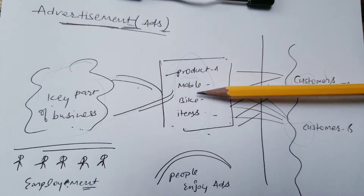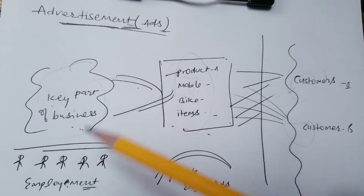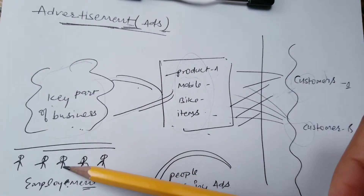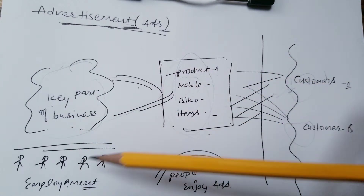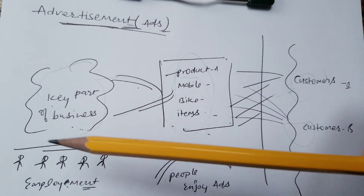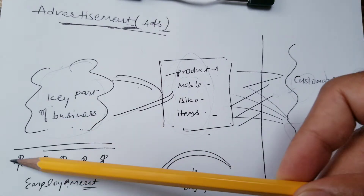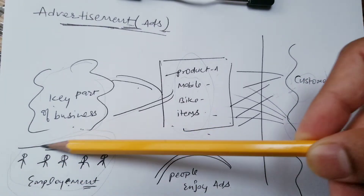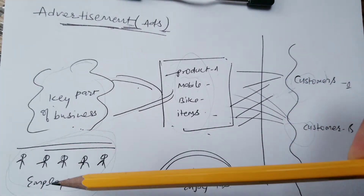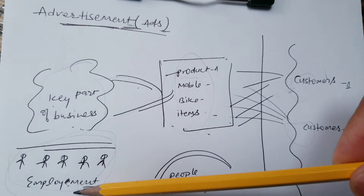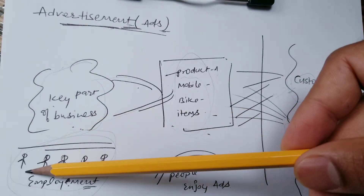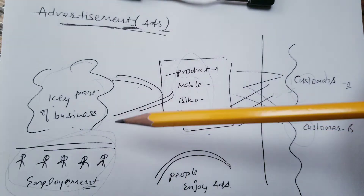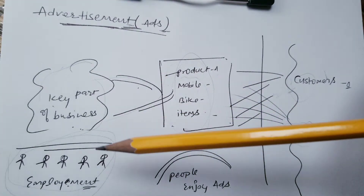Another advantage: as a company you need a team who can support your advertisements — you need people to make your advertisements. Basically the advertisement industry is providing jobs to a significant number of people. To make a 30-second advertisement you need hundreds of people to support it.